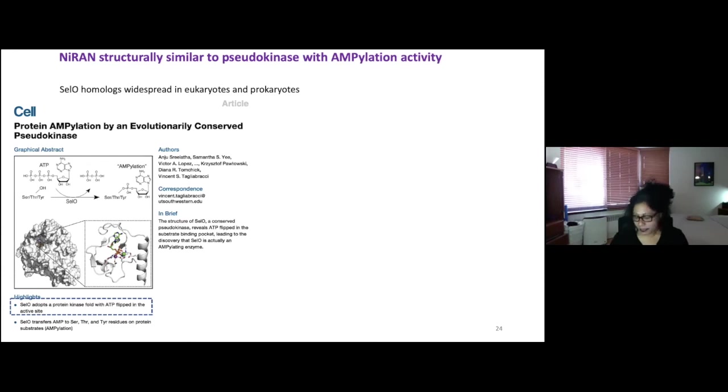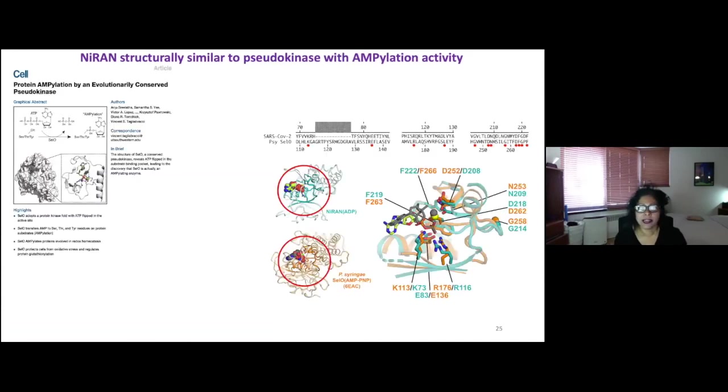So why am I telling you this is because the NiRAN domain, as I said, looks like the pseudokinases. And what's interesting about these pseudokinases as well too, is the NTP is flipped. So you just flip it over and that would be a kinase. And so we see the same sort of relative orientation is the same. The base, the amino acids interacting with the nucleotide are conserved.